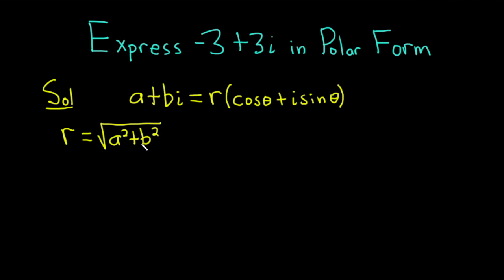There are more formulas. This is kind of a bare minimum way to do it, which is the way I prefer to do it. It's less memorization. So a here is going to be negative 3, and b is going to be 3.